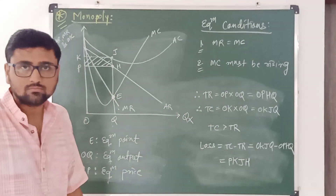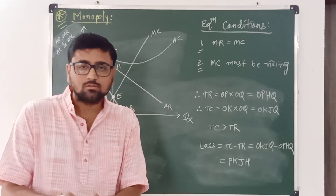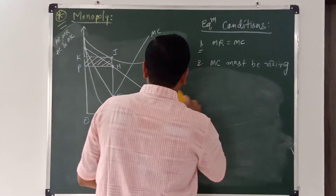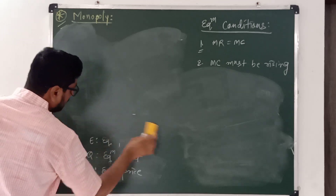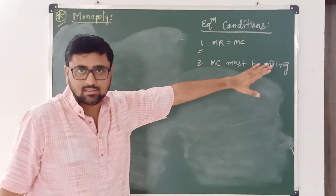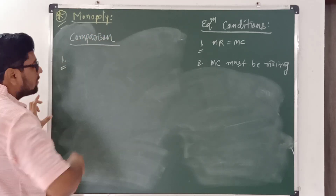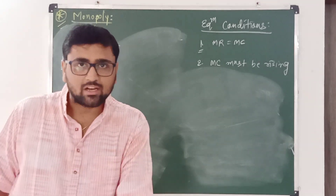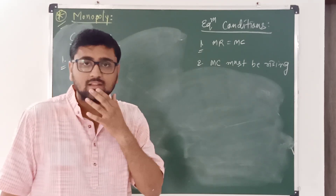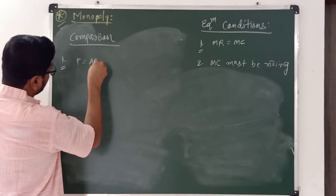The important point is the comparison between a perfectly competitive firm and a monopolist. The equilibrium conditions are the same for both market structures: marginal revenue equals marginal cost, and marginal cost must be rising. In a perfectly competitive market, the demand curve or price line means P equals AR equals MR.